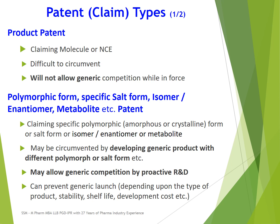The first patent type is the product patent, which claims the molecule or NCE — new chemical entity — itself. Product patent is the broadest kind of patent; it provides the broadest protection to the product and is difficult to circumvent or bypass. Generics will not be allowed until the expiry of the product patent.